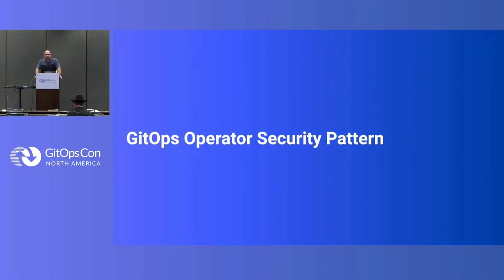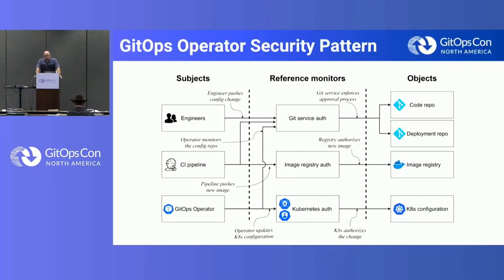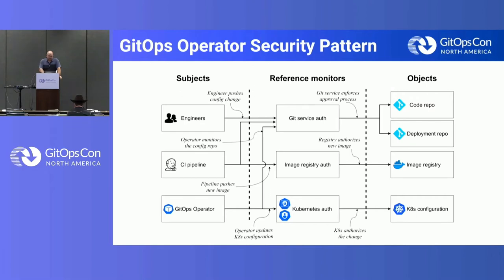I want to take a high-level view and look at the GitOps operator security pattern. This diagram is showing who are the subjects making changes, what are the things that need to be protected, and what are some of the points in between that need to be secured. The rest of the talk will be drilling down into each of these, looking at specific things that you can do.